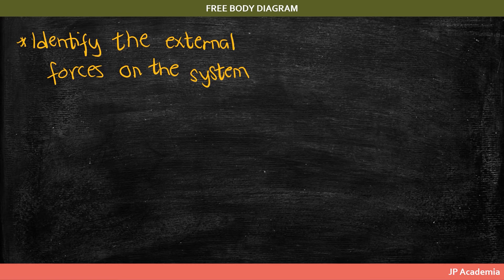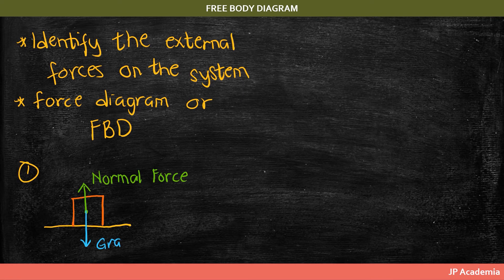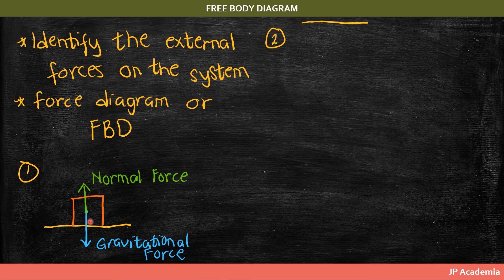We can represent these forces through a free body diagram. For example, a box sitting on a table has two forces: an upward normal force and a downward gravitational force. Since there is no acceleration along the y-axis, the normal force and the gravitational force are equal in magnitude.